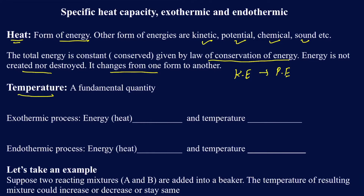On the other hand, temperature is actually a fundamental quantity. Energy is not a fundamental quantity — it's a derived quantity. Temperature is a fundamental quantity, and the units for temperature, for the most part, are going to be degrees Celsius or Kelvin. We do use degrees Fahrenheit, but degrees Fahrenheit are not used in any sort of calculations. The SI unit is going to be Kelvin and Celsius.